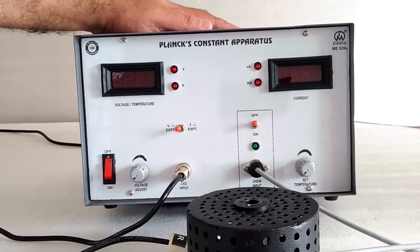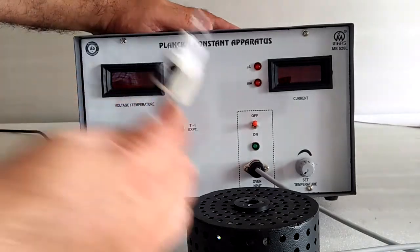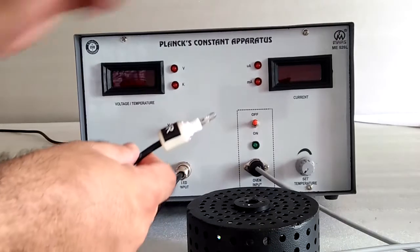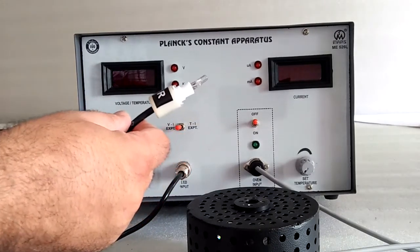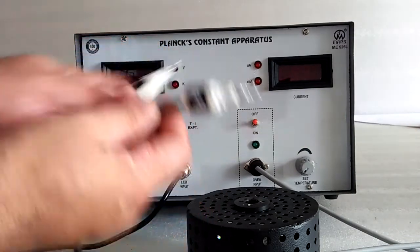Here is the Planck constant apparatus to find the value of Planck's constant using LEDs. In this kit we have provided two LEDs: red LEDs and yellow LEDs.